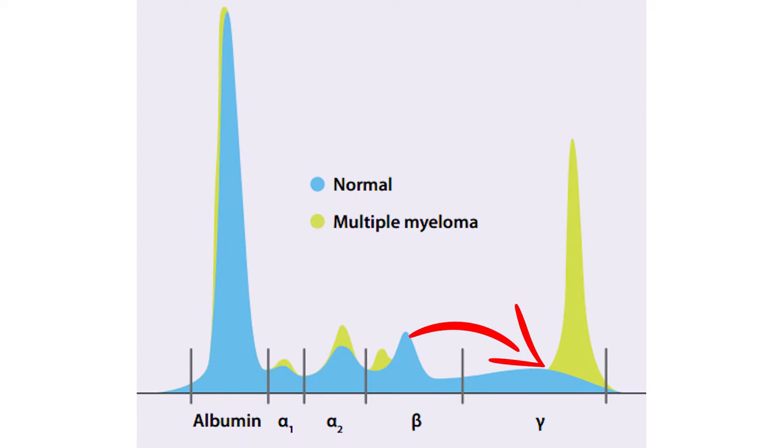In the blood, we can detect this protein by some chemical properties. We essentially run all of the blood proteins across an electrical gradient, and they separate based on how they travel through that electrical gradient. You can detect a normal pattern, something called a polyclonal pattern, on this thing called an electrophoresis, a protein electrophoresis.